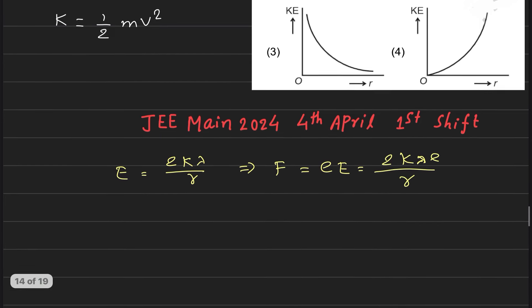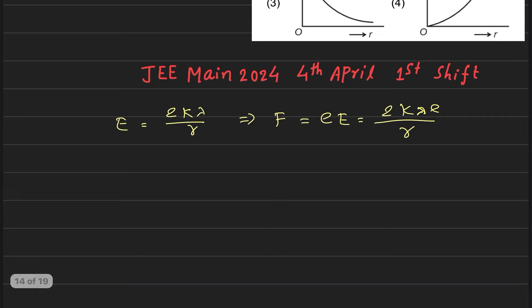Now if we know the electric force, then we can equate it to the centripetal force. So 2k lambda e upon r is equal to mv square by r. So we cancel this r. Whatever electrostatic force, the centripetal will be equal to.